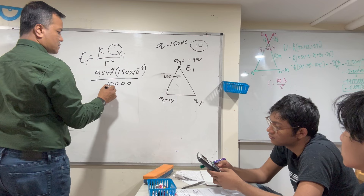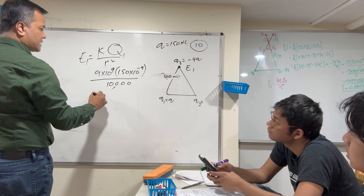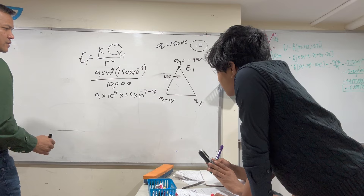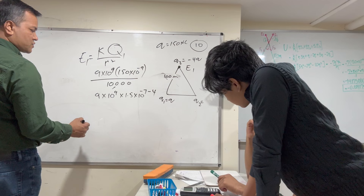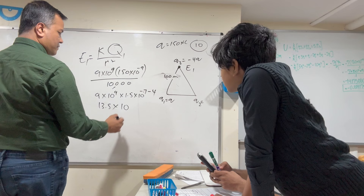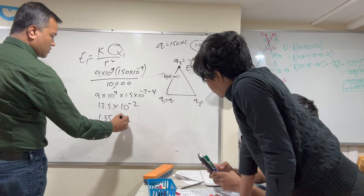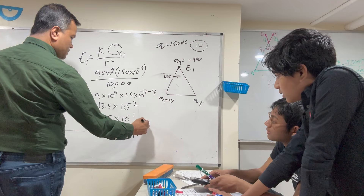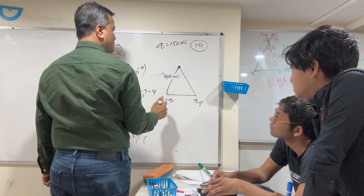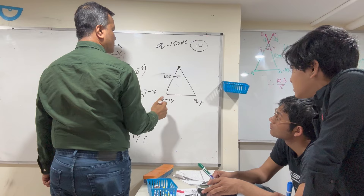Calculating: 9 × 10⁹ × 1.5 × 10⁻⁷ = 13.5 × 10² / 10⁴ = 1.35 × 10⁻¹ = 0.135 Newtons per Coulomb. That's surprisingly large for such a long distance and small charges. The direction is northeast. So E1 on Q3 = 0.135 N/C northeast. We've finished all the problems!